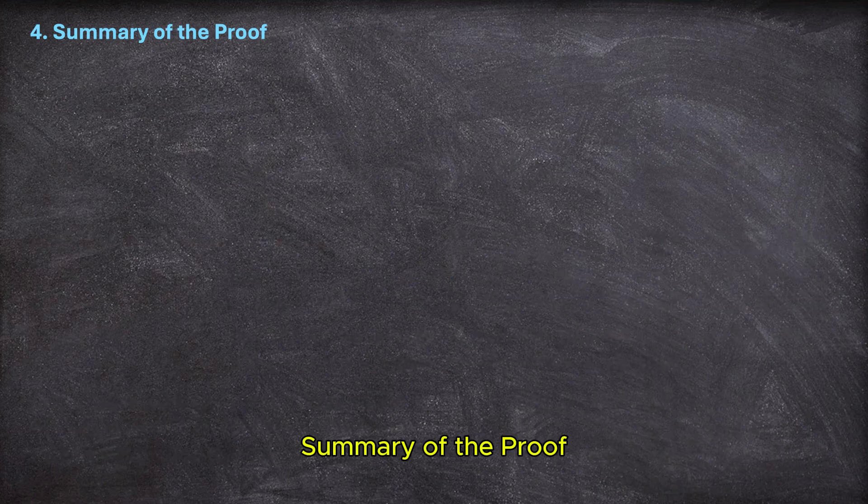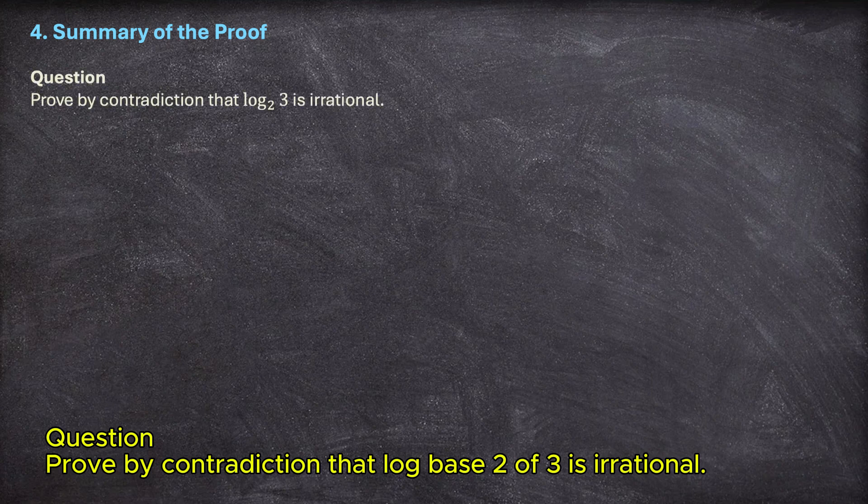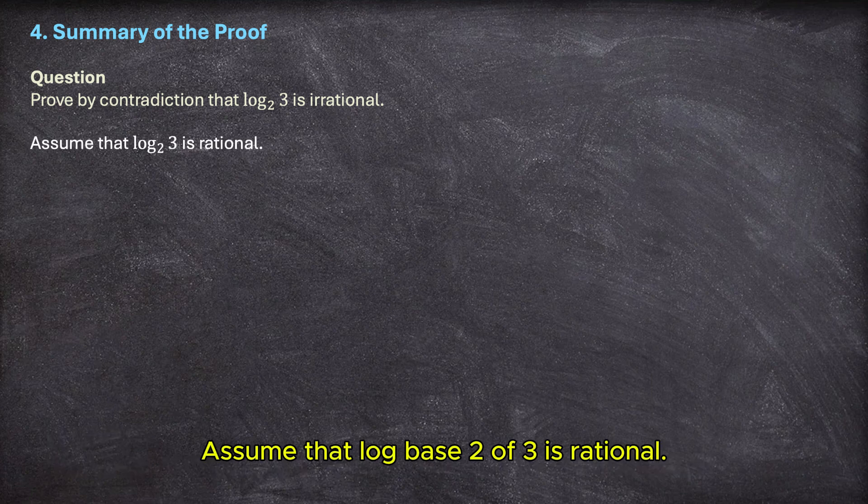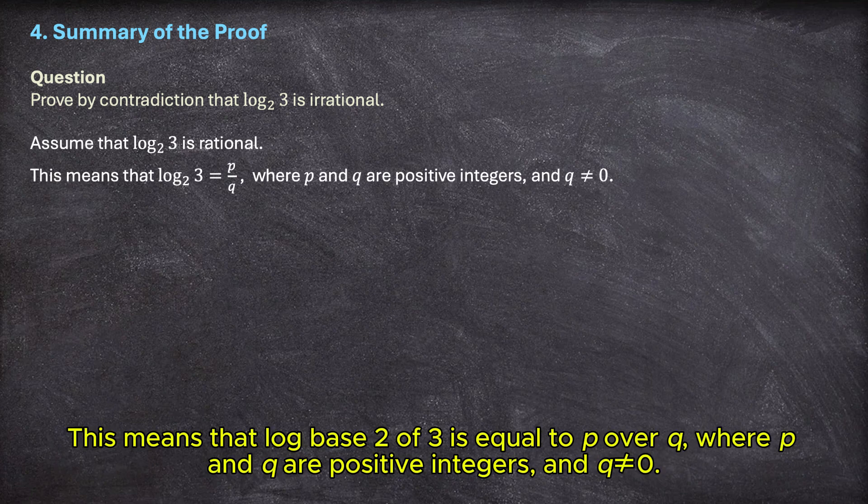Summary of the proof. Question: Prove by contradiction that log base 2 of 3 is irrational. Assume that log base 2 of 3 is rational. This means that log base 2 of 3 is equal to p over q, where p and q are positive integers, and q is not equal to 0.